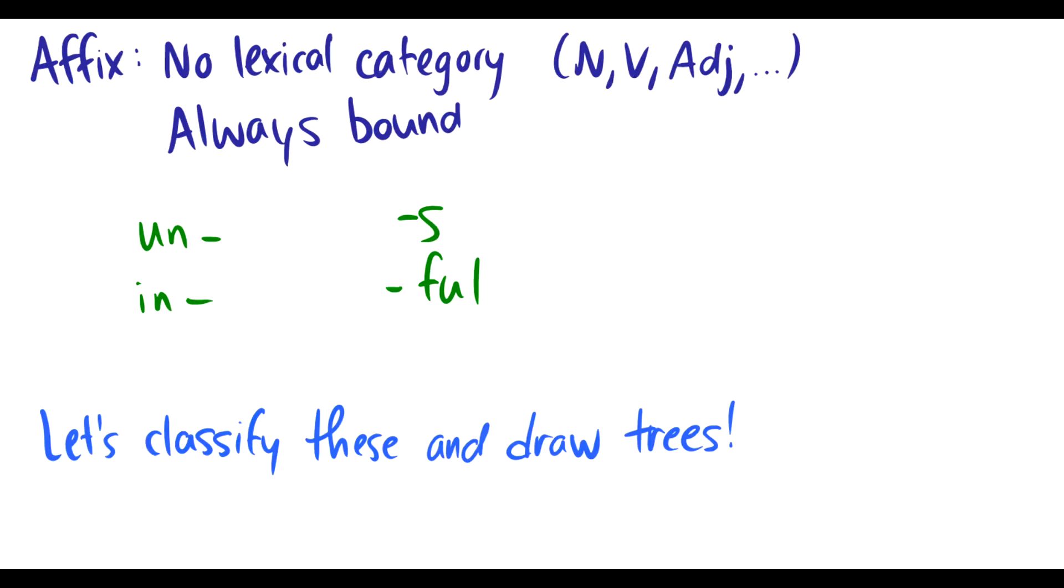So affixes. Affixes are prefixes, suffixes, infixes. So these don't have lexical categories. So they're not nouns, they're not verbs, they're not adjectives. They're just morphemes, they're just bound morphemes. And they attach to words to either change or to keep the lexical categories the same. So I'll show you that in a second.